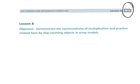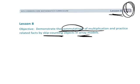This is Grade 3, Module 1, Lesson 8, where we are going to be talking about the commutative property of multiplication and connecting the commutative property with skip counting and arrays.